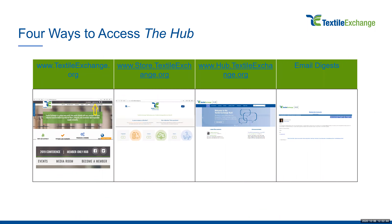We have four different ways to access the Hub that are easy and convenient. The first way is through textileexchange.org. Anytime you are on our main website, there is a member-only Hub button on the top right-hand corner. The second way is through store.textileexchange.org, where we have publications available for non-members, and you can access the Hub as well. Then we have the main way, which is just the URL: hub.textileexchange.org.